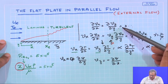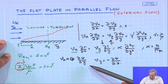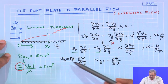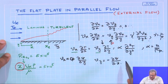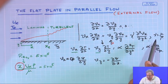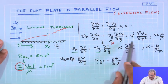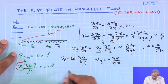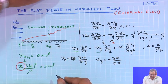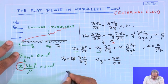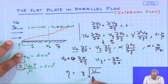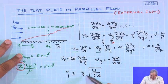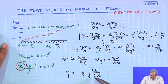We do not need to solve the continuity equation separately once we define velocity in terms of stream function ψ — only the momentum equation remains. This is a partial differential equation that can be solved using the method of combination of variables. A new independent variable η is defined as η = y√(U∞/νx), where U∞ is the free-stream velocity, ν is kinematic viscosity, and x and y are the independent variables.